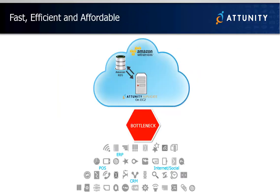Attunity Replicate for Amazon RDS is designed to remove this data transfer bottleneck, leveraging high-performance data replication, ease of use, and high-speed data transfer technologies. The solution offers a simple and powerful way to extend on-premises database management effectively and affordably, without training precious IT resources.